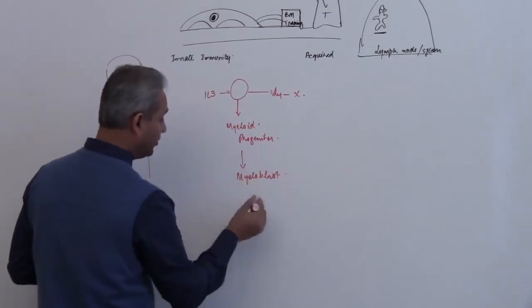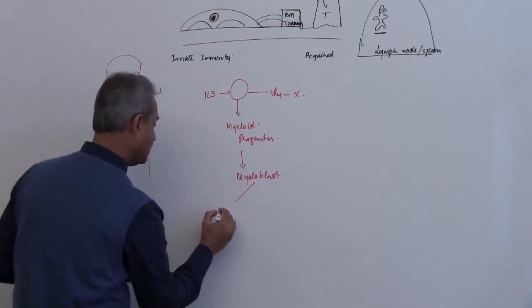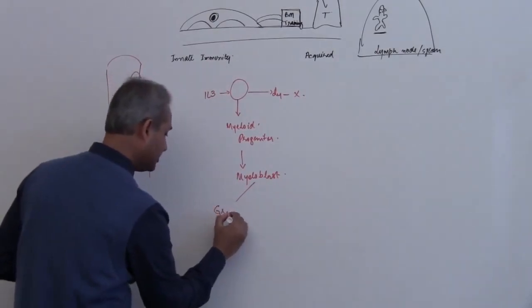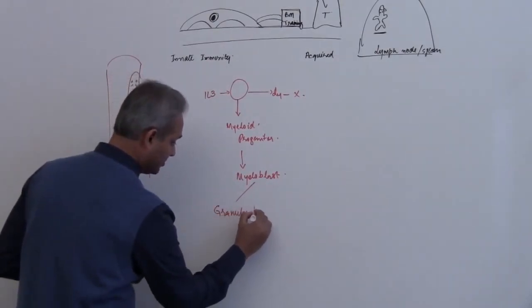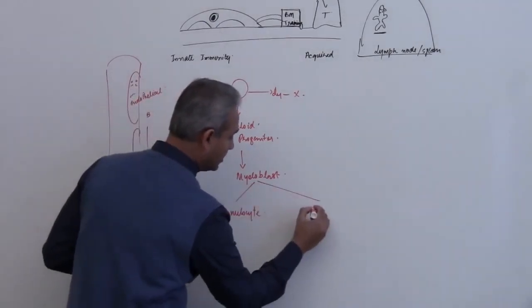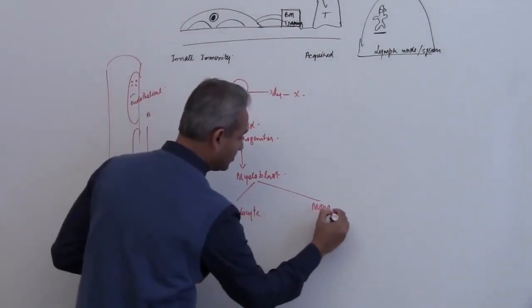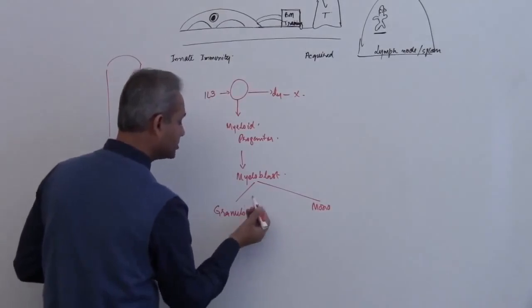Myeloblast, which gives rise to the granulocyte and monocyte, so granulocyte, granuloblast.